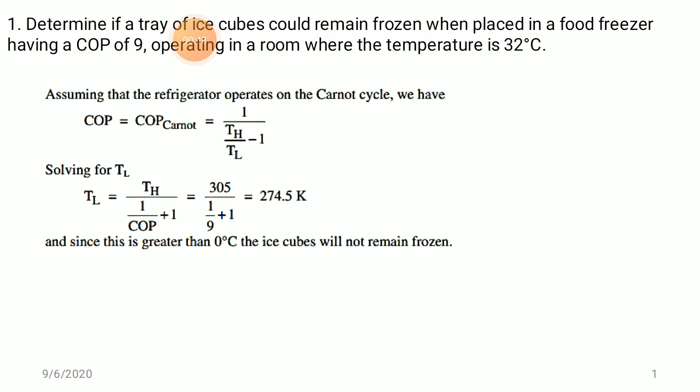COP of Carnot cycle is TL upon (TH minus TL), or equivalently 1 upon (TH/TL minus 1). Solving for TL, we have to determine the temperature of ice that can remain in frozen state. Rearranging the equation, TL is equal to TH upon (1/COP + 1). COP of the refrigerator is given.